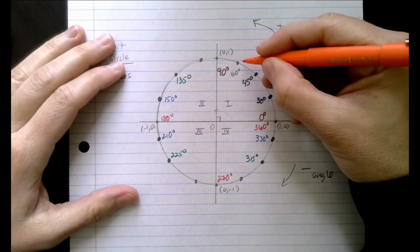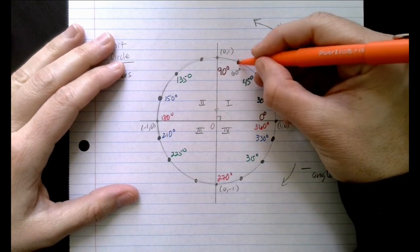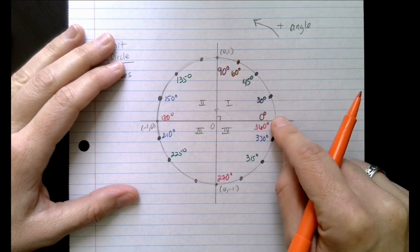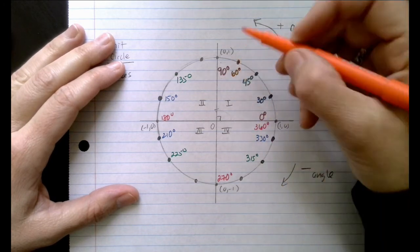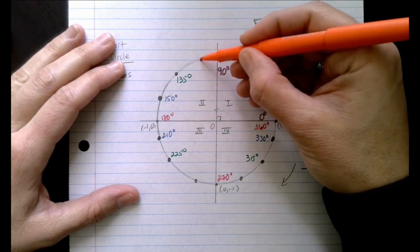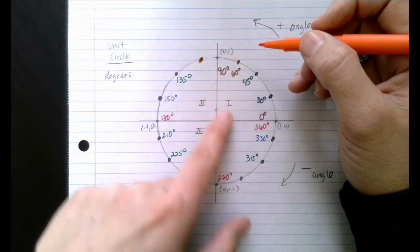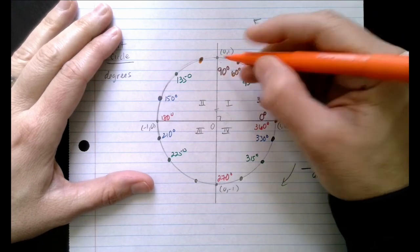The last angle on here is probably going to be your most challenging one, and that's the 60 degrees. The 60 degree angle is 60 degrees from this x-axis. Now if I reflect over the y-axis, I end up over here. So if this is 60 degrees, I'm doing another 60 degrees, which is 120.